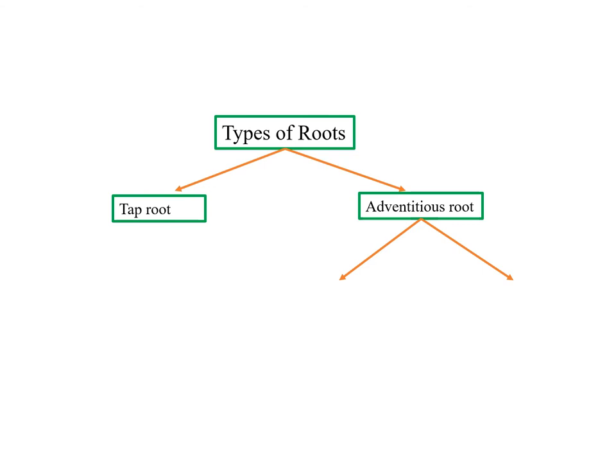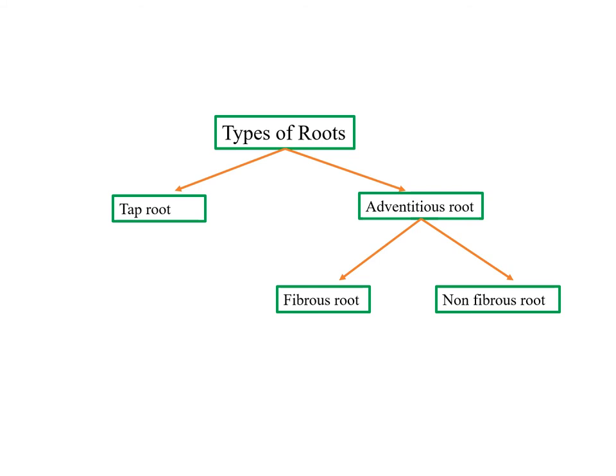Adventitious roots can be classified into two further types: fibrous root and non-fibrous root. Tap root is the type of root that develops directly from the radicle — the actual vertical root is called the tap root. Adventitious roots are roots that arise from an organ other than the root, usually the stem or sometimes a leaf. The adventitious root that grows in a cluster from the base of the stem is called fibrous root. The adventitious root that does not grow in a cluster but rather develops separately from one another is called non-fibrous root.